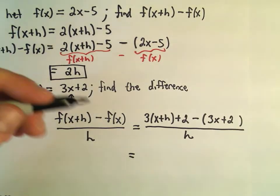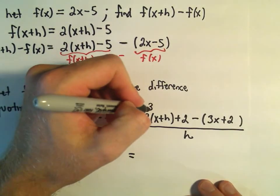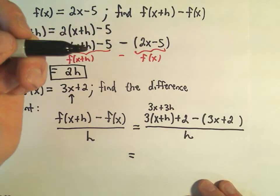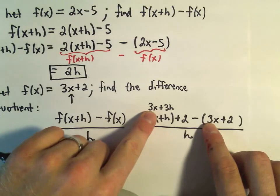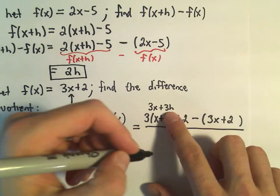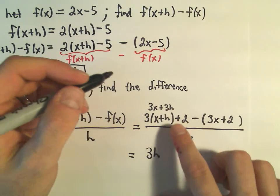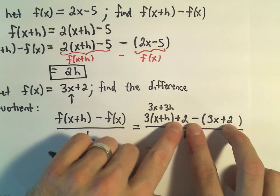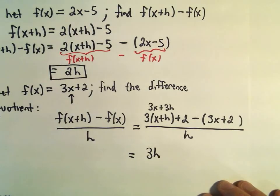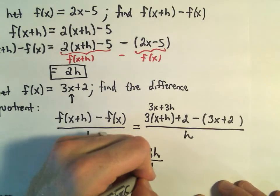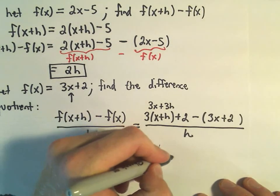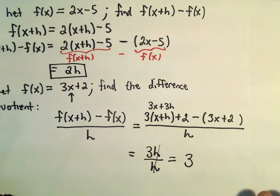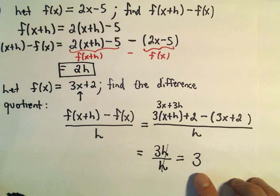So if we distribute out the numerator again, notice we would get 3x plus 3h in the first set of parentheses. If I take the 3x minus the 3x, that would cancel. So I would be left with 3h. Notice we have a plus 2, and we would get a negative 2 when we distribute. So those would also cancel out. We've still got the h in the denominator, but now we can simply cancel out our h's. And the difference quotient of the function 3x plus 2 is just the value, the number 3.